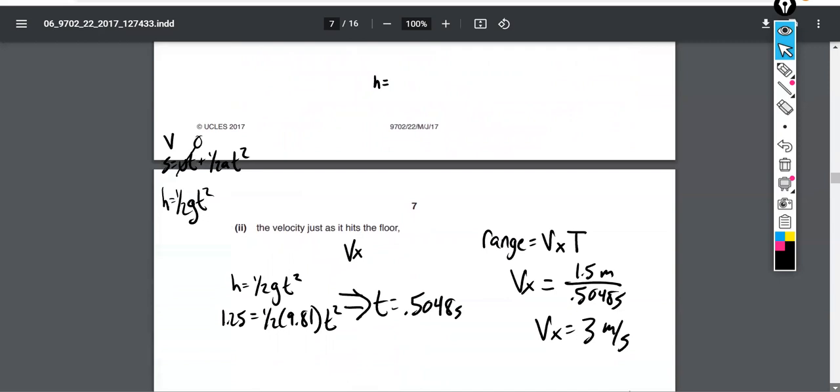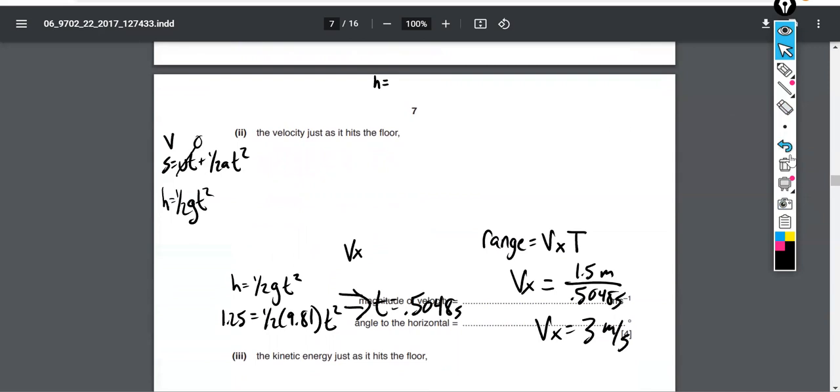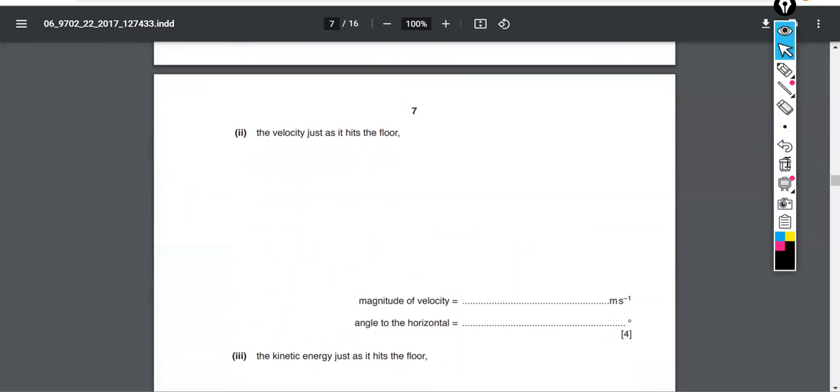The next thing is the velocity just as it hits the floor. So let's consider how we can calculate both the magnitude of that velocity vector and its direction. It hits the floor at an angle like this. It has a sideways component that we've already calculated, 3 meters per second, and it's got a component going down. You can calculate that downward component as the square root of 2gh.